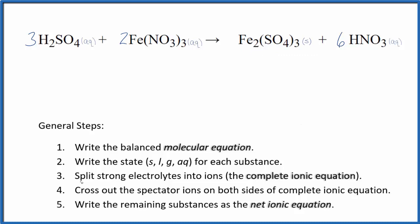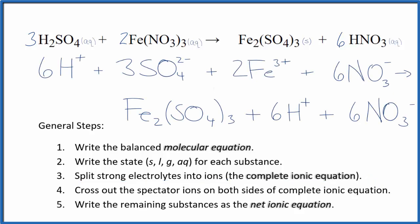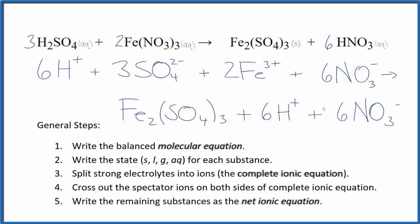Once we have the states, we can split the strong electrolytes into ions for the complete ionic equation. This is the complete ionic equation, and we split everything apart except the solid. We keep the solid together here.